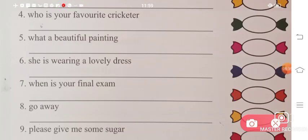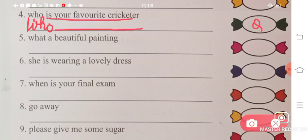Next is number four. 'Who is your favorite cricketer?' When 'who' comes, it's a question, so that's for sure. Capitalize the first letter of the sentence - W-H-O who. Then write the complete sentence as it is. At the end, put a question mark because it's a question, so write Q here.